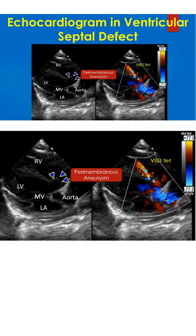The right panel shows the mosaic VSD jet from the apex of the aneurysm into the right ventricle. Other structures seen in the image are the aorta, left ventricle, and left atrium. The mitral valve is in the closed position, as it is a systolic frame.